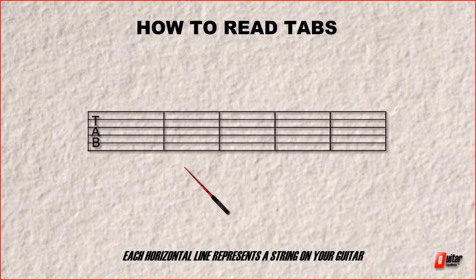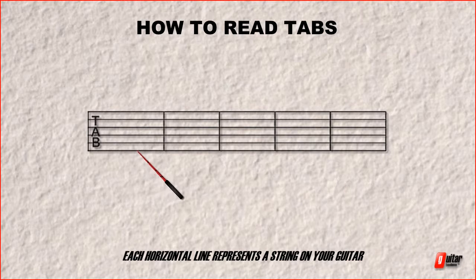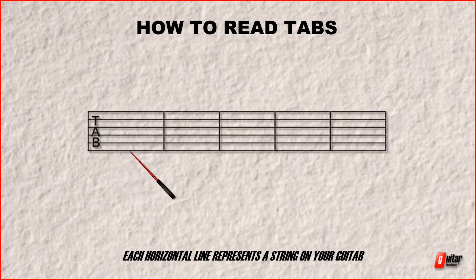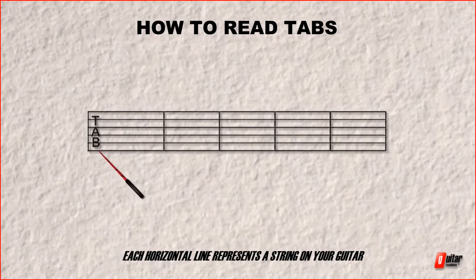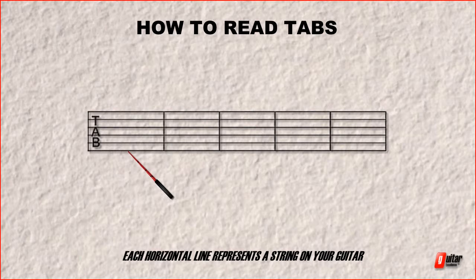Alright now the first thing to notice or the first thing to point out is that tabs are upside down. Now this means that this bottom line here is actually the first accessible string to you on your guitar. So if you're holding your guitar in your lap that thickest string at the top there is actually this bottom line on the tab here. So there's your low E string or the sixth string. So it goes in numerical order.